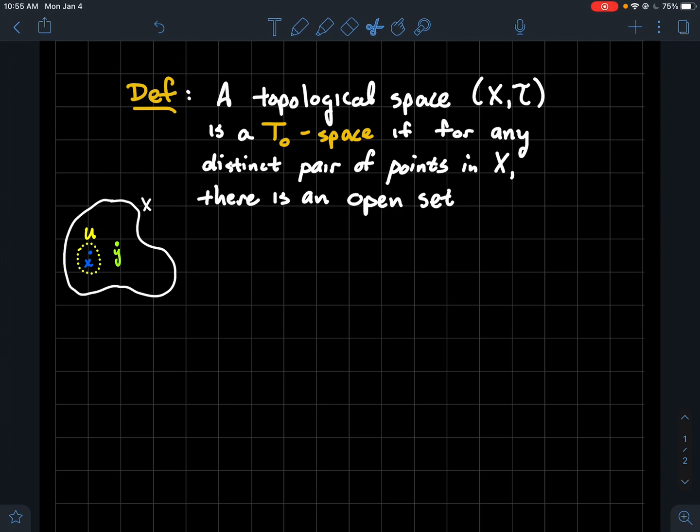What should we be able to do? There is an open set, and so what is that? That's some U, that's some element of the topology such that—well look at my picture there—U contains one of the points but it misses the other point.